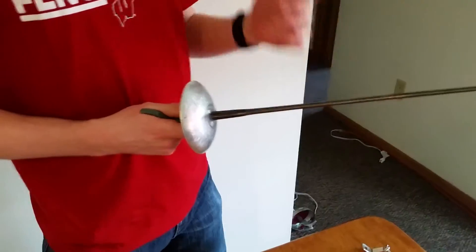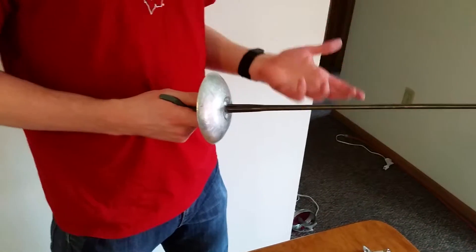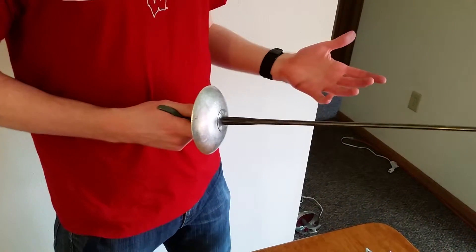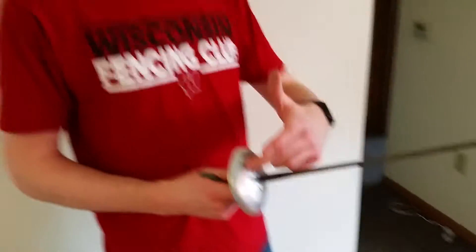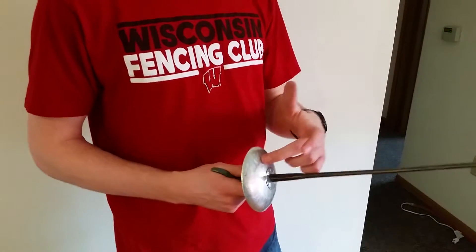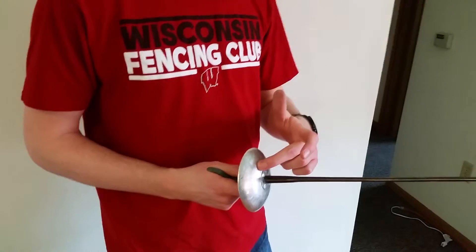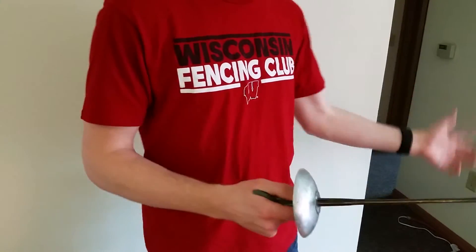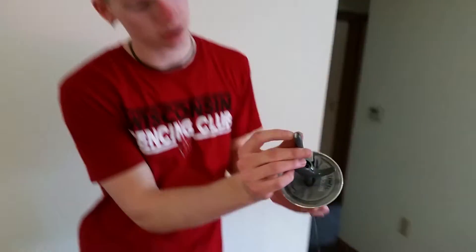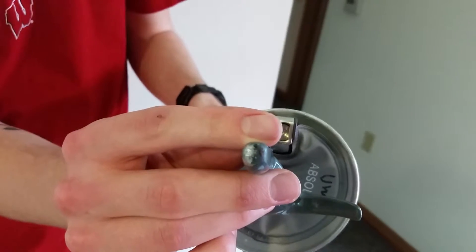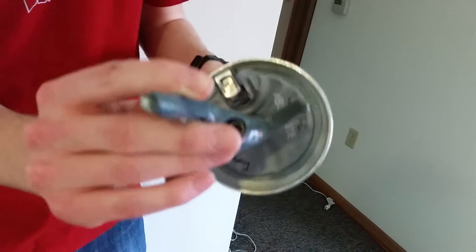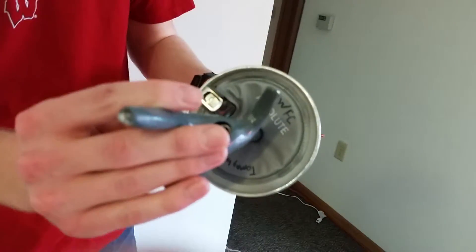So that way if you're fencing and you touch the end of the grip to your lame, it doesn't ground out your entire weapon. Because if you had an uninsulated grip on a foil and you did this into your lame, that's actually a red fencing t-shirt, this guard would become target and if someone hit you on the guard it would register as a valid touch. So you use an insulated grip on a foil and you can see here that the paint is starting to wear off, it's not a real big problem but it's something to keep in mind.